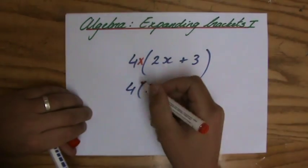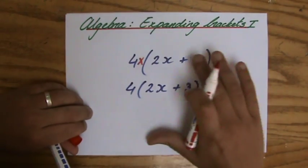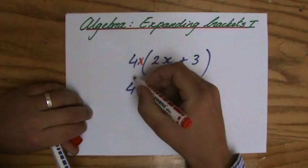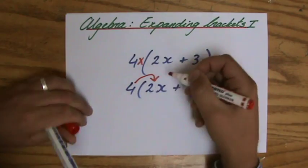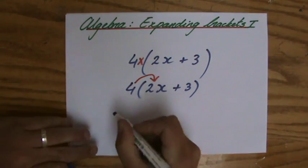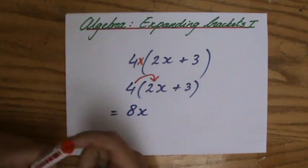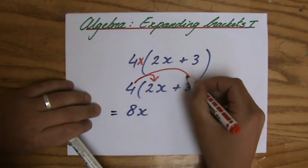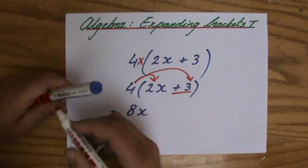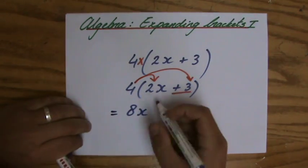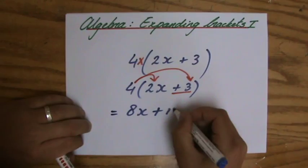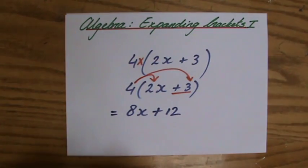And what times? Well I have to do 4 times all the terms inside of my brackets. So I have to do 4 times 2x. And 4 times 2x is 8x. And, don't forget that one, I have to do 4 times a positive 3. And 4 times a positive 3 is a positive 12.